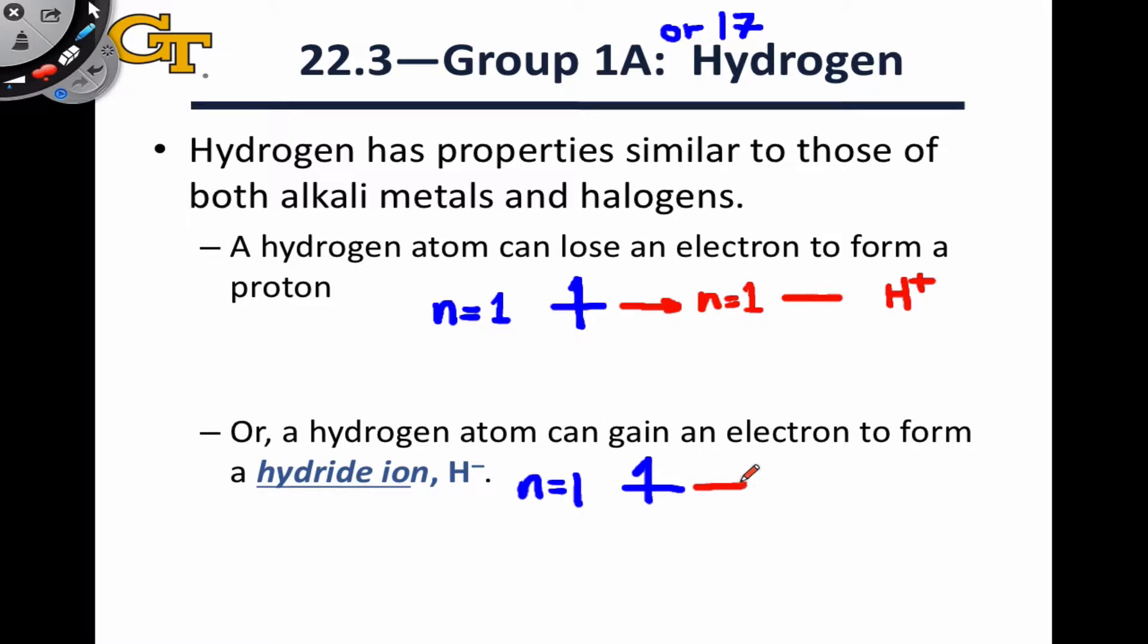However, if hydrogen gains an electron from something that can donate an electron to it, it ends up with a completely full valence shell, and we end up with the species H-, which in a sense is analogous to a halide anion like bromide, chloride, fluoride, with a full valence shell and a formal charge of negative 1.